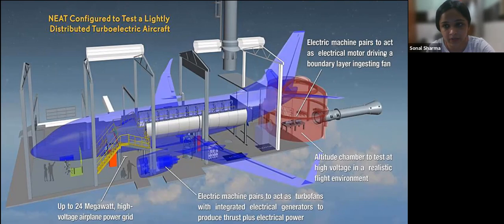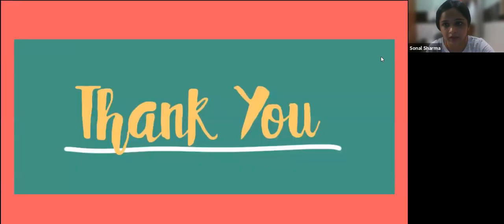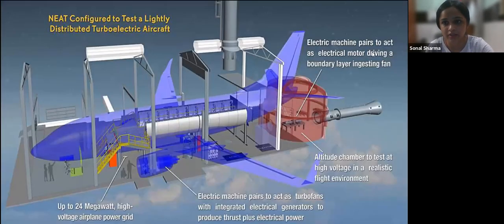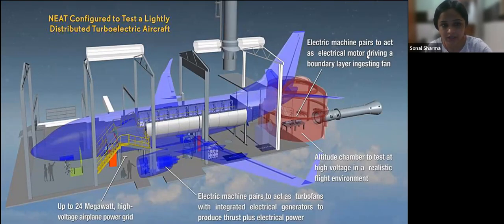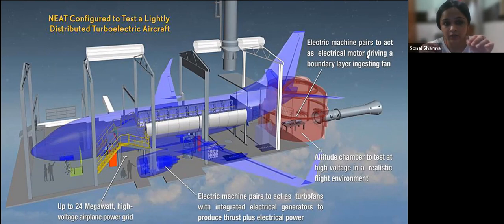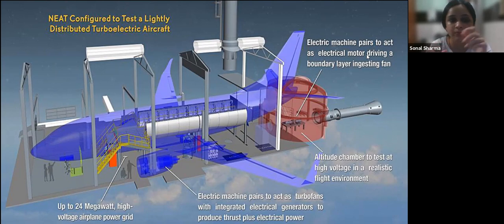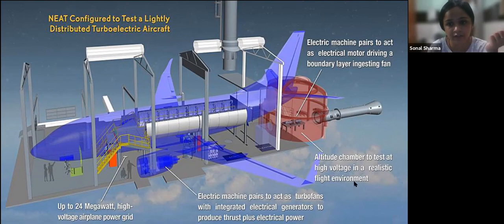The electrical machine pairs act as an electric motor driving a boundary layer ingestion fan. The boundary layer is the thin layer of fluid that forms on the surface of an aircraft as it travels through the air. There is also an altitude chamber used to test at high voltage in a realistic flight environment.